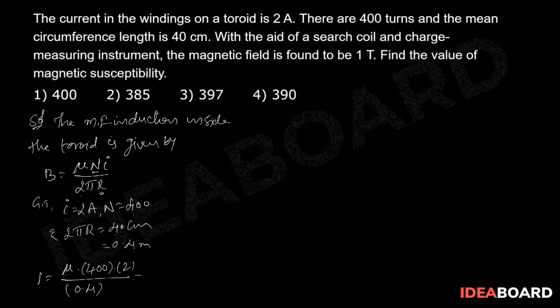From this, the permeability of the core material is given by simply we will get here 5 into 10 power minus 4. Take it to the equation 1.